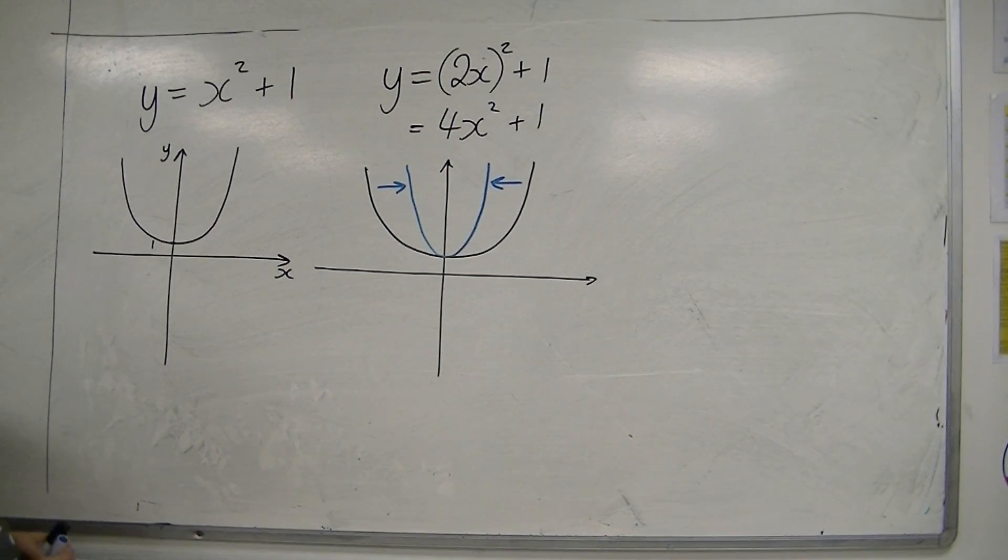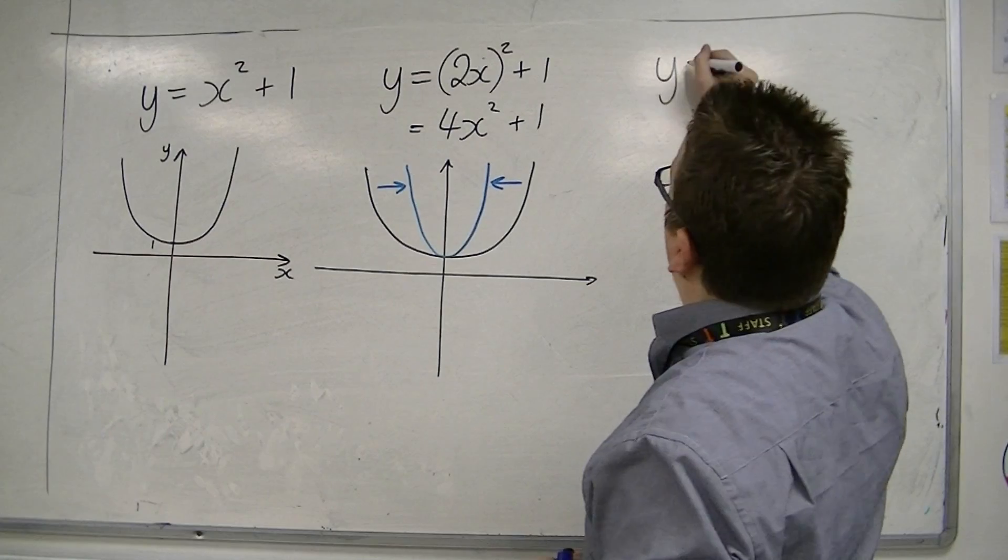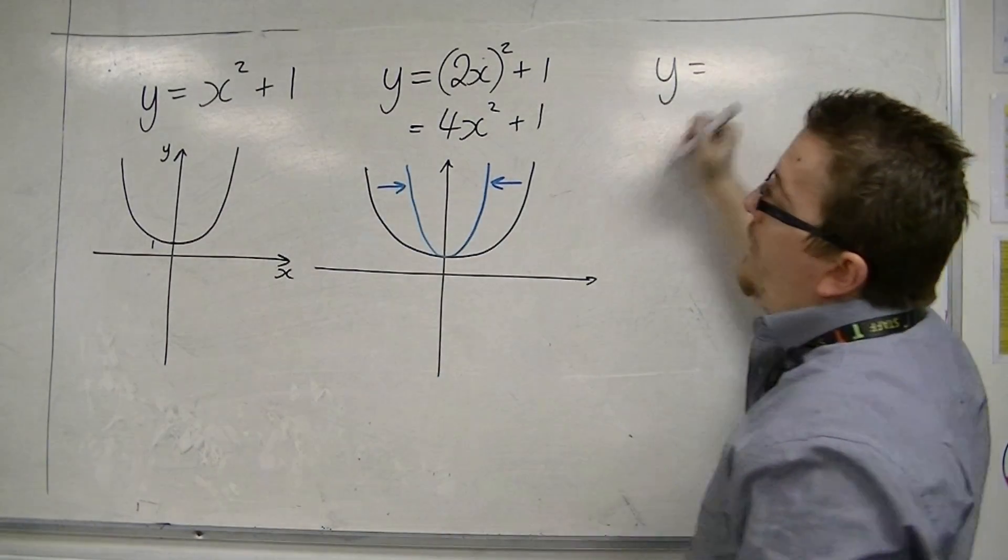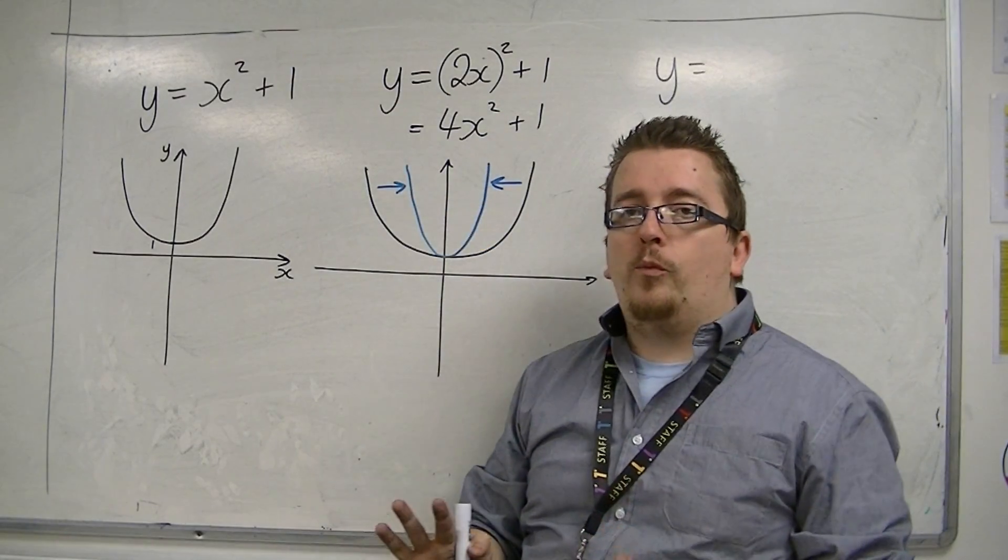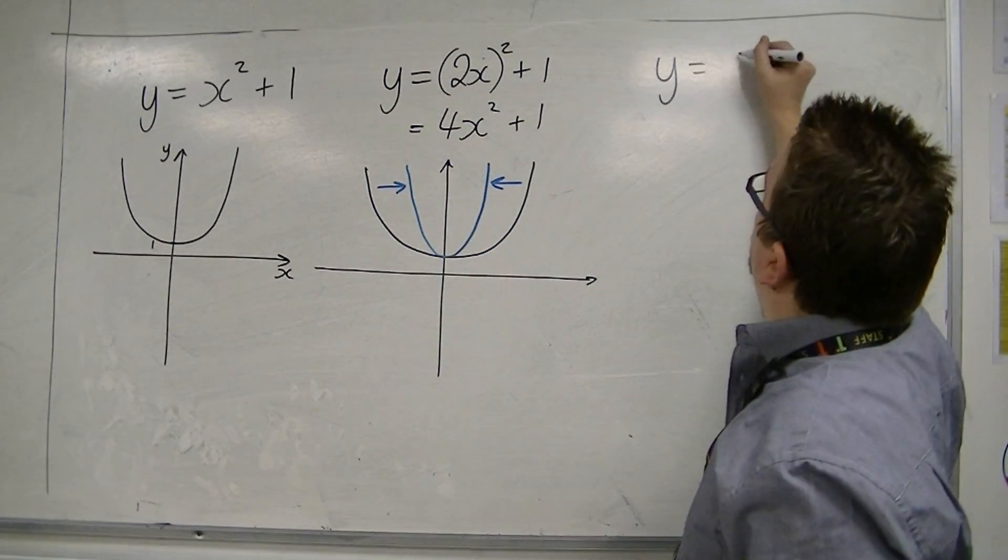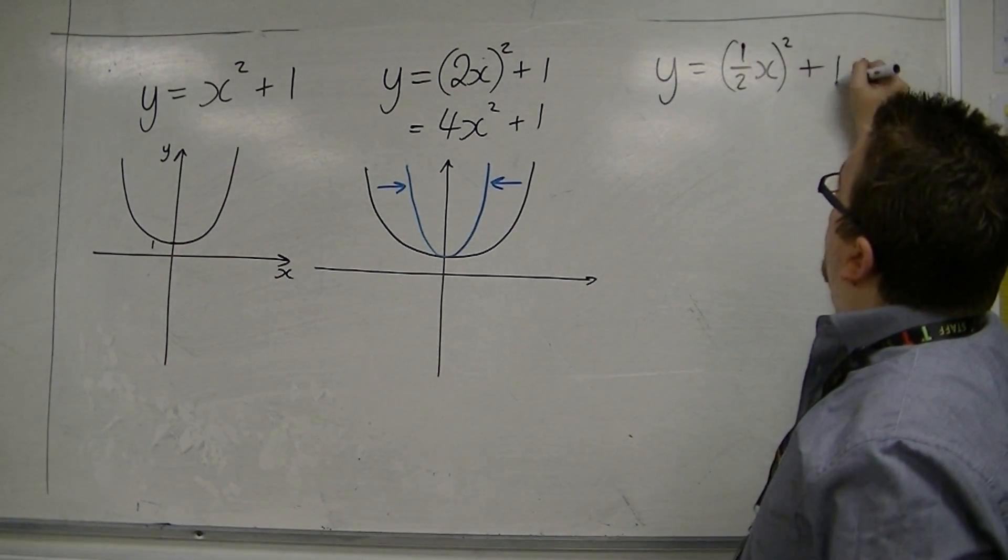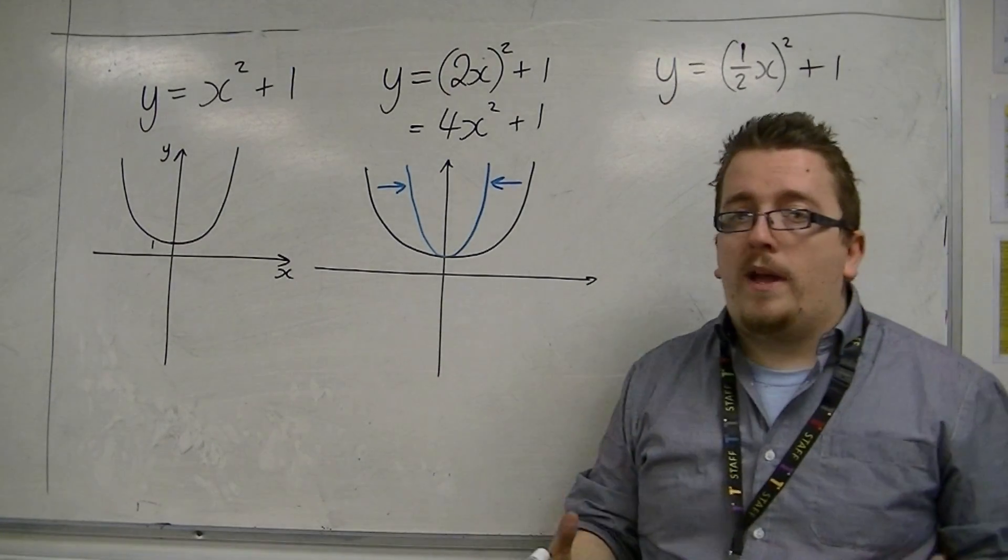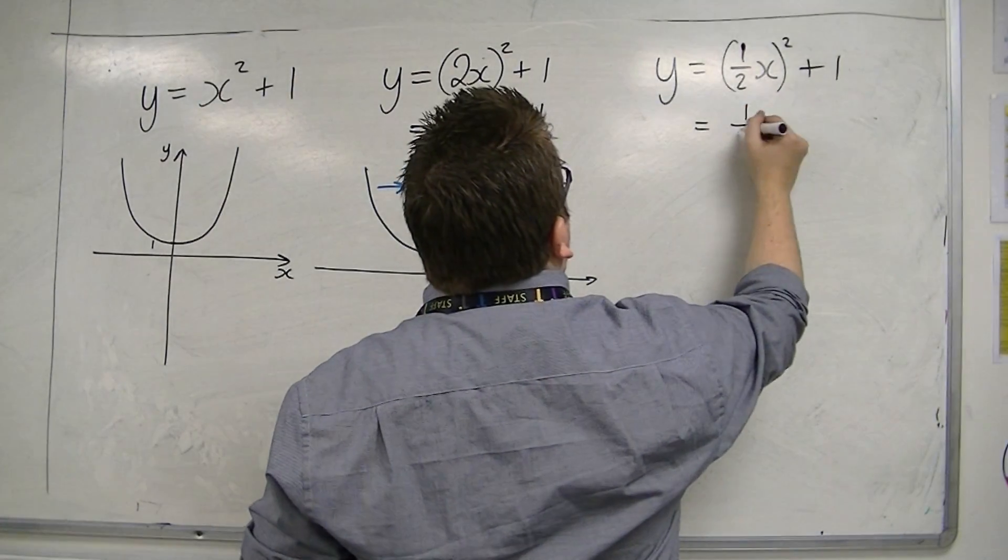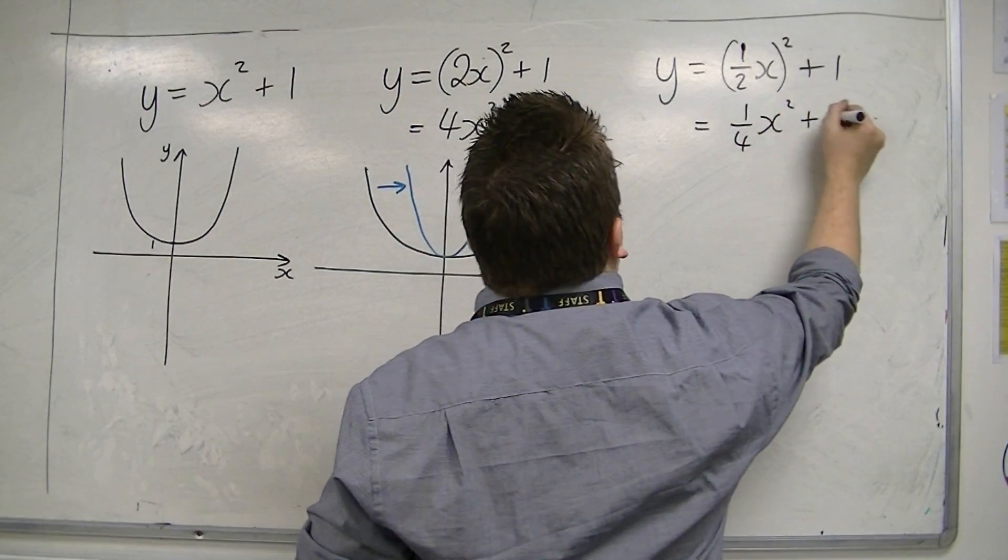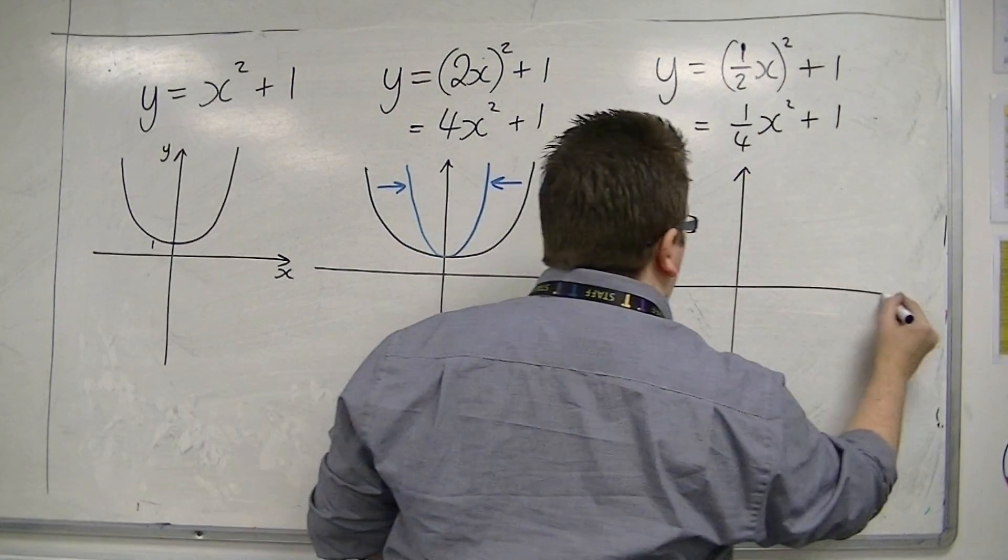How about if I look at the same equation, but instead of replacing x with 2x, I'm going to replace x with a half x. If I replace x with a half x, I have y equals a half x-squared plus 1. If I multiply that out, we now have 1 quarter x-squared plus 1.